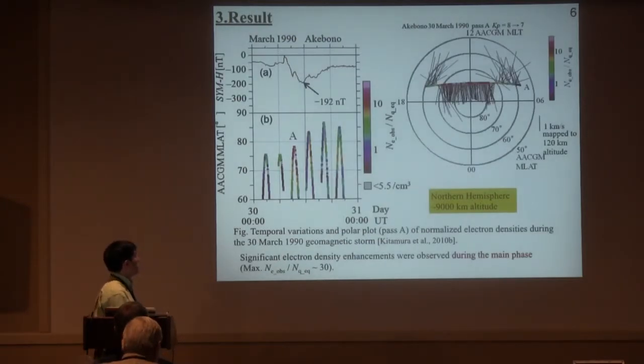This is a storm time observation by the Akebon satellite. This panel shows the normalized electron density by the quiet time level. During the main phase of the geomagnetic storm, very high electron density that is higher than about 30 times compared to the quiet time level is observed. This is the trajectory of the Akebon satellite. In this case, it is the altitude of about 9,000 km. Akebon satellite crosses the dayside polar cap from dawn side to dusk side. The thin black lines show the convection. The high density regions are very widely spread in the dayside.